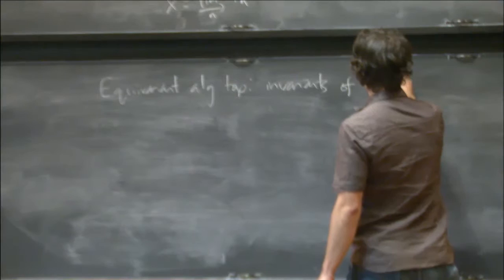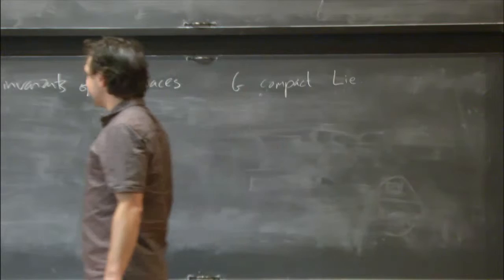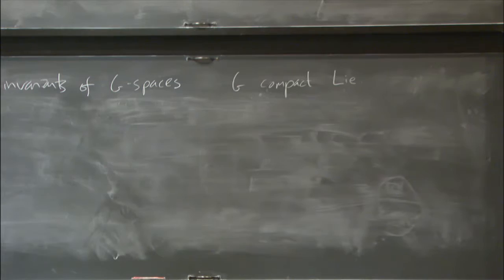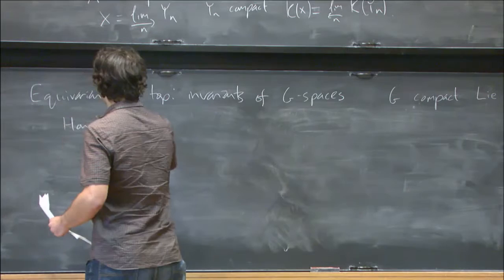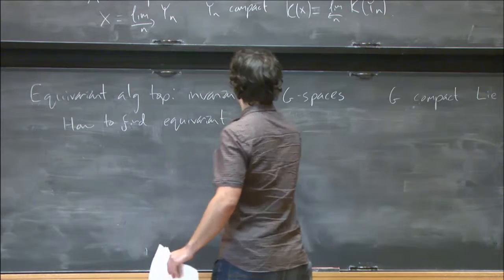So I want to study invariants of G-spaces, and here I'll take G to be a compact Lie group for now. And I might want to think about cohomology theories on the category of G-spaces. So how can I find equivariant cohomology theories?